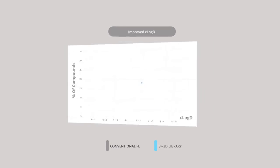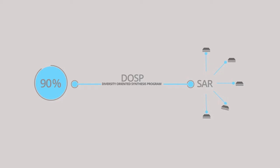Another important feature of the 3D fragment library is that more than 90% of the library members have arisen from our diversity-oriented synthesis program. This means that SAR is easier to do after you get hits, and we can easily design and synthesize additional sub-libraries should you need them.